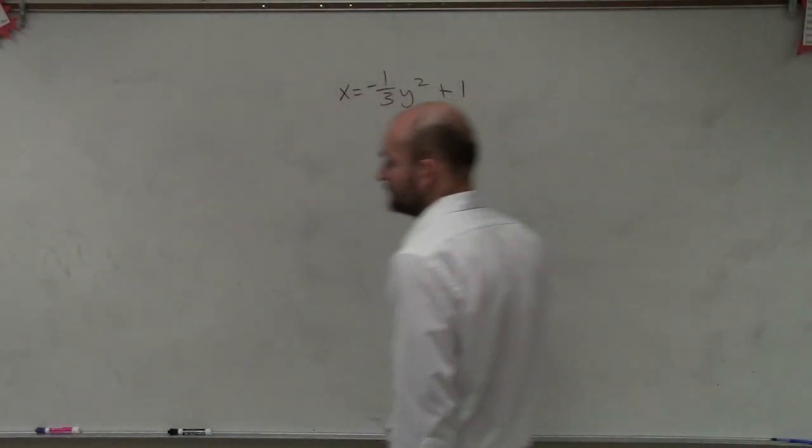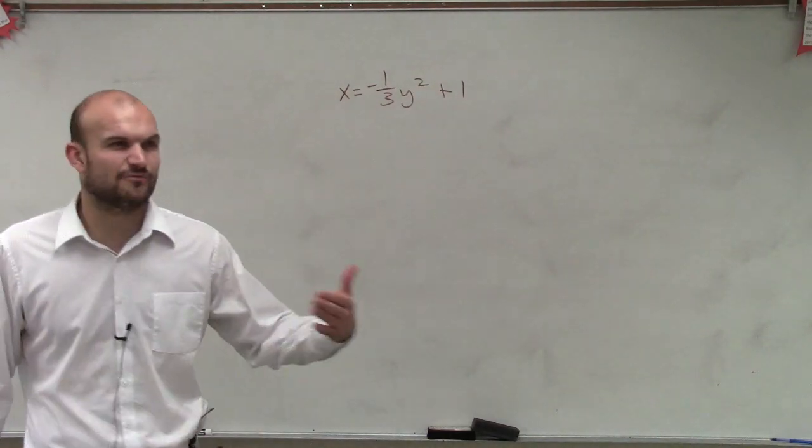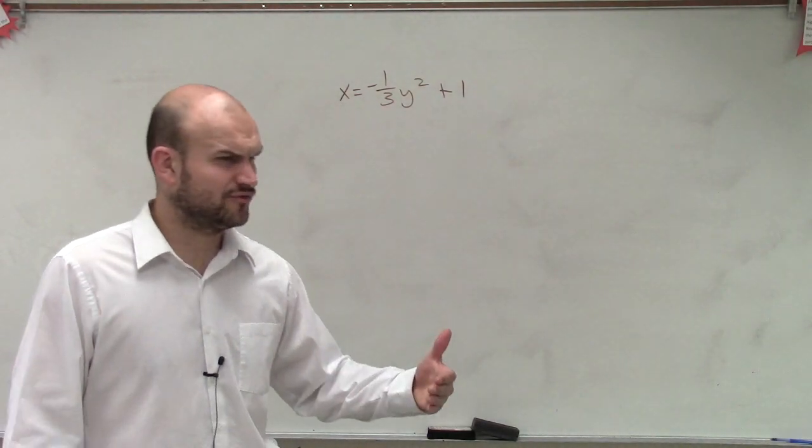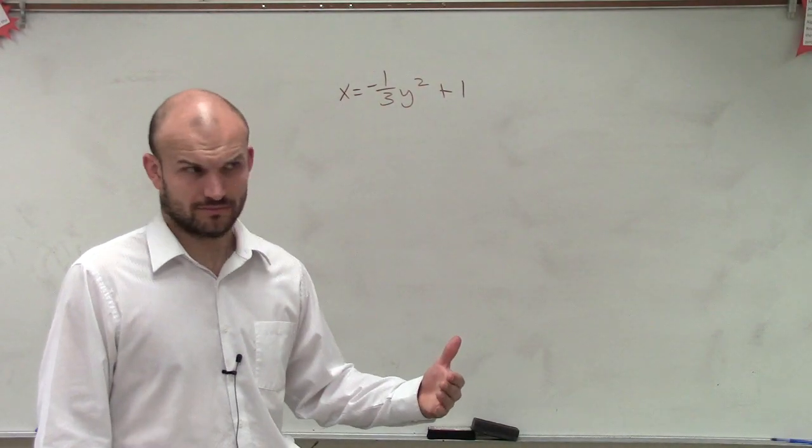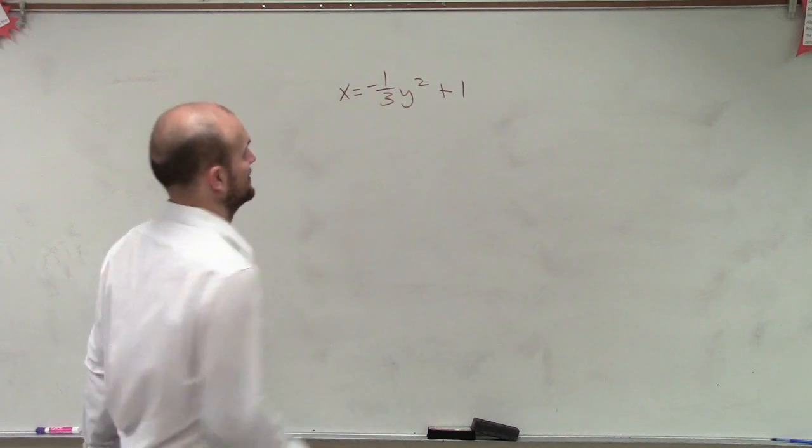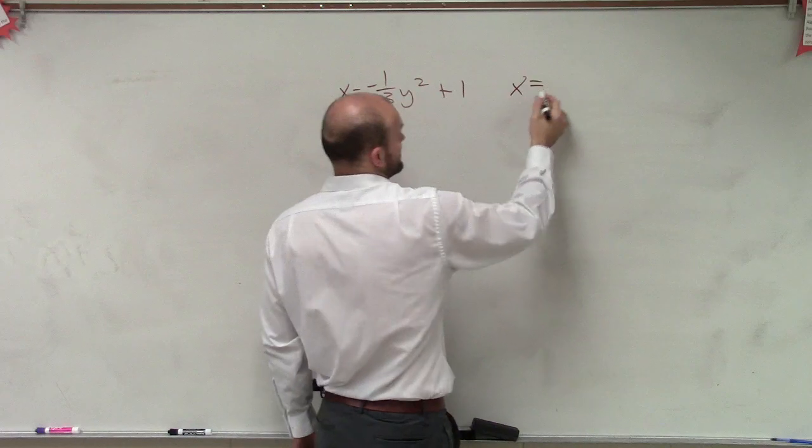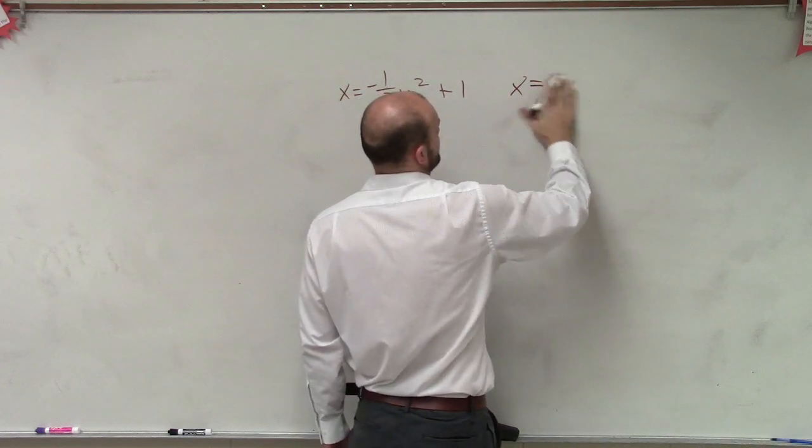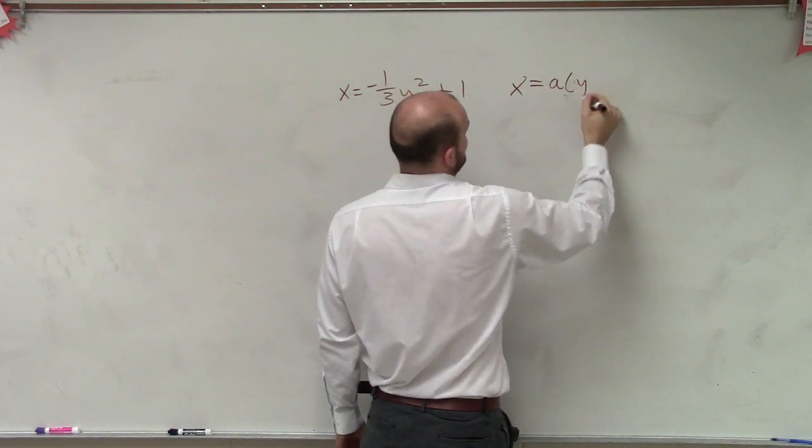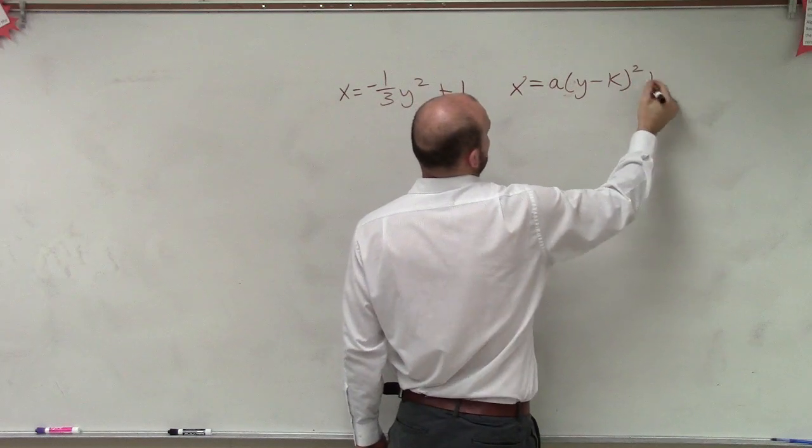To graph this problem, the first thing I want to do is make sure I rewrite this in my standard form. So what I have, standard form for when x equals, is going to be x equals a times y minus k squared plus h.